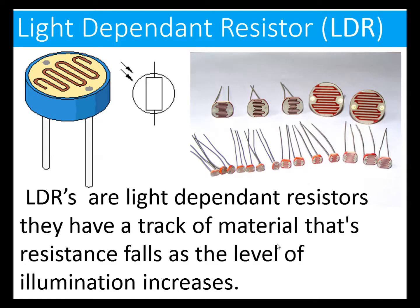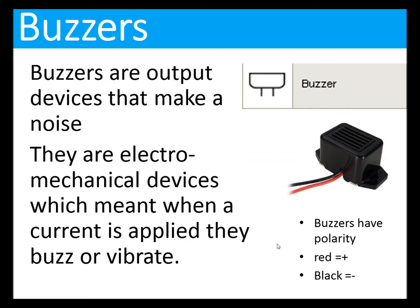LDRs — light dependent resistors — have a track of material whose resistance falls as the illumination increases. Buzzers are an output device that make a noise. They're an electromechanical device, which means when a current is applied they buzz or vibrate. Buzzers have polarity.